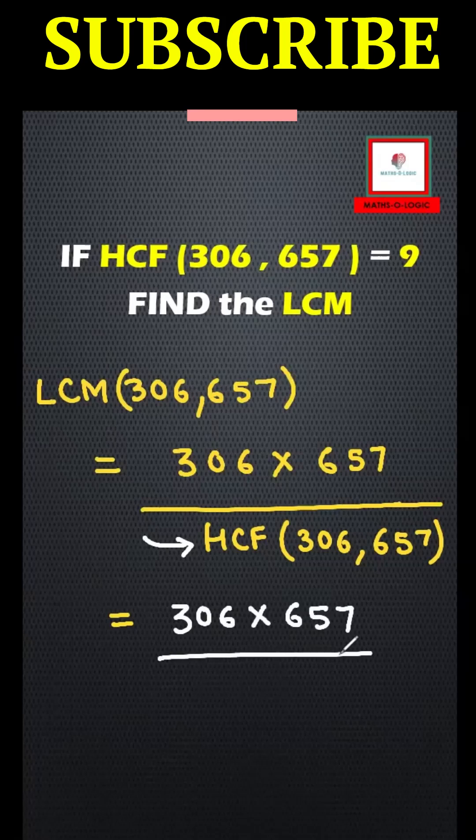306 into 657 divide by 9 because HCF is 9. So just solve this and I will get 22,338 as my answer.